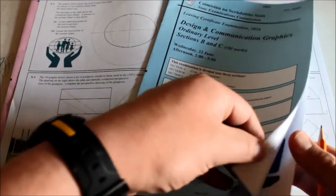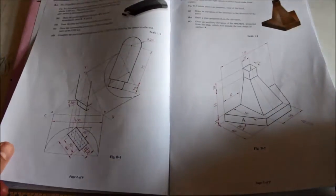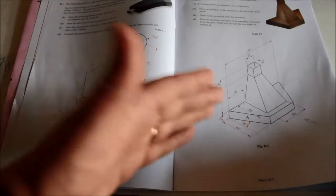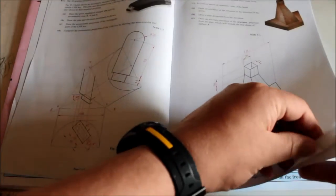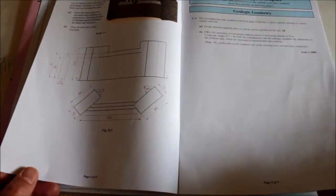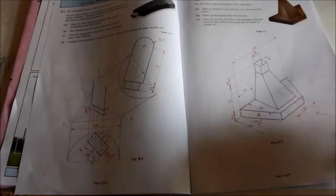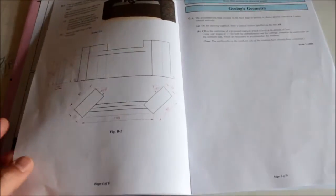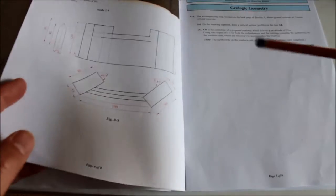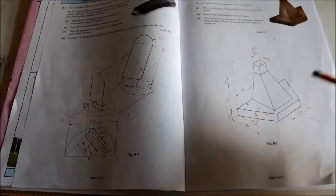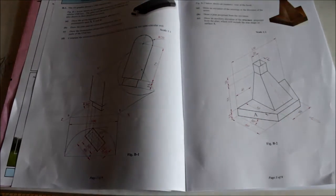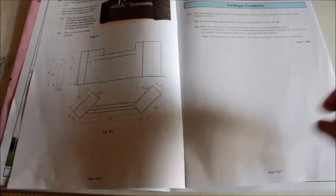In section B, we know what's coming up at ordinary level. You have your axonometric, your orthographic with the auxiliary view, and your intersection solids. The orthographic and intersection solids are the main two I focus on with my group. I've seen harder ones come up in past years, so these were nice enough questions.